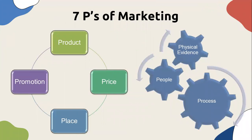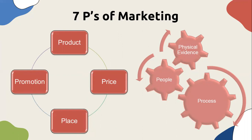Let's understand the seven P's of marketing before we proceed. The four traditional P's of marketing are product, price, place, and promotion. The extended P's are process, people, and physical evidence. These seven P's are important when we talk about product marketing or services marketing.